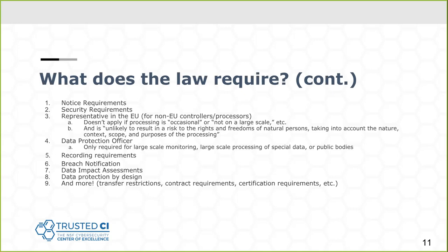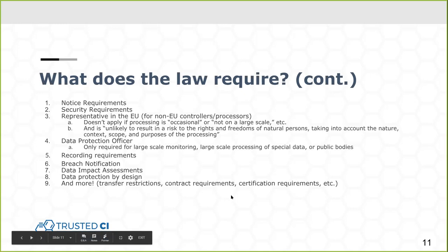Less likely to apply to most in this audience is the data protection officer requirement. This is a role organizations are required to implement if they carry out large-scale monitoring or large-scale data processing, or if they're acting like a public body — basically, people who are going to have a considerable impact on privacy. You have to create an office called a data protection officer or DPO. For most of this audience, this is probably not a relevant requirement, but if you're doing lots of human research data on people in the EU, maybe it applies.